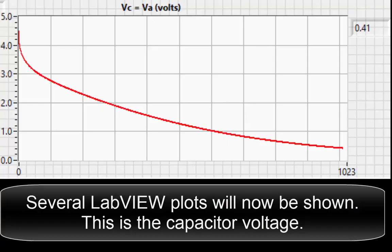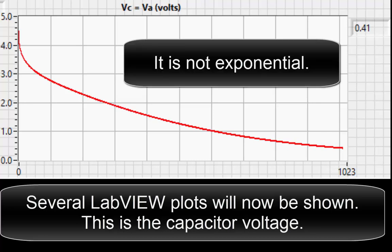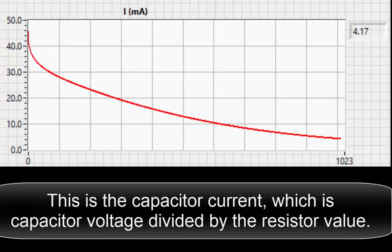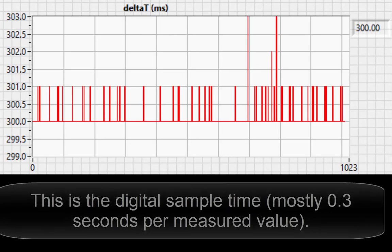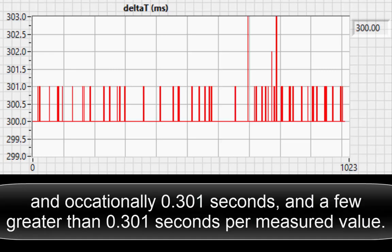Several LabVIEW plots will now be shown. This is the capacitor voltage. It is not exponential. This is the capacitor current, which is the capacitor voltage divided by the resistor value. This is the digital sample time, mostly 0.3 seconds per measured value, and occasionally 0.301 seconds, and a few greater than 0.301 seconds per measured value.